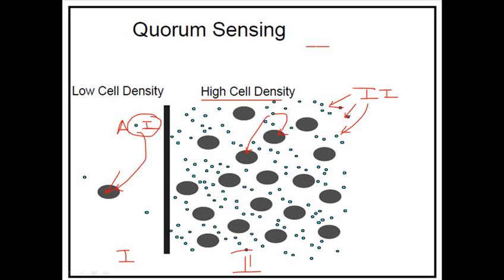Since the bacteria produce their own inducing molecules and those molecules act on themselves, this kind of system is called an auto-inducing or auto-signaling system. This auto-signaling can be seen in all quorum sensing systems. In the second picture, when there is a huge density of cells, they produce a huge concentration of inducing molecules, which finally induce the bacterial cells to produce the luminescent molecule, causing them to glow in the dark.